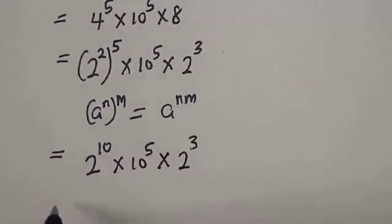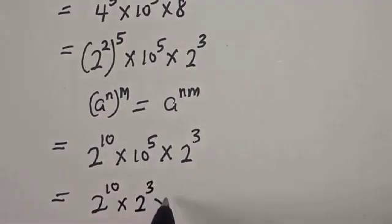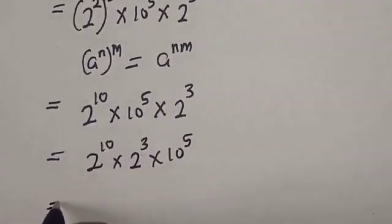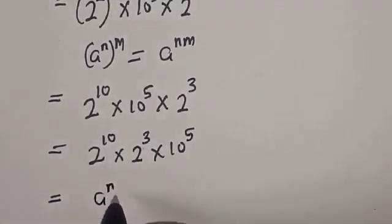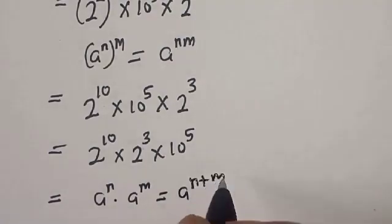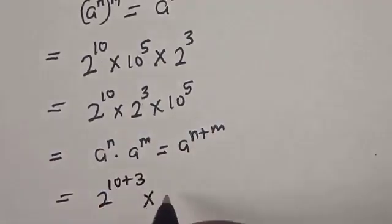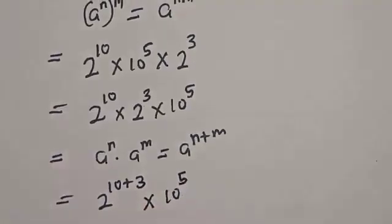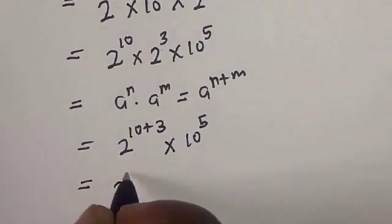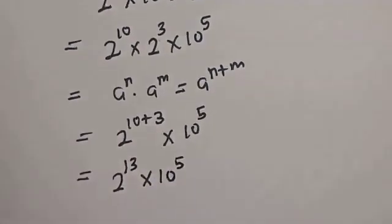So we have 2 to the power of 10 multiplied by 10 raised to power 5 multiplied by 2 raised to power 3. Rearranging, we have 2 to the power of 10 multiplied by 2 to the power of 3, multiplied by 10 raised to power 5. Using the rule a raised to power n multiplied by a raised to power m equals a raised to power n plus m, we get 2 to the power of 10 plus 3, that is 2 raised to power 13, multiplied by 10 raised to power 5.